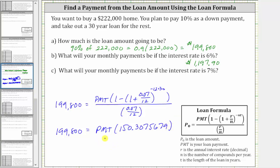And now to solve for PMT, the monthly payment, we divide both sides of the equation by 150.3075679. Simplifying on the right, this quotient is one, giving us PMT times one, which is PMT. The monthly payment is equal to the quotient on the left, which we will now evaluate on the calculator, and round to the nearest cent.